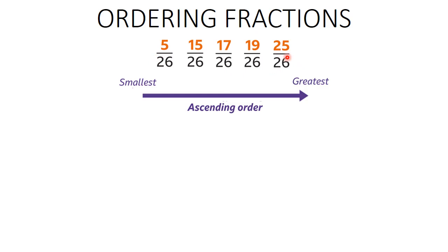When denominators are the same in a fraction, all you need to do is order their numerators. The smallest will be 5 over 26, then 15 over 26, then 17 over 26, then 19 over 26, and finally 25 over 26. This is how you order fractions in ascending order — from the least to the greatest, from the smallest to the largest value.